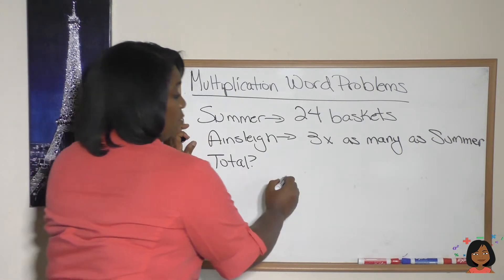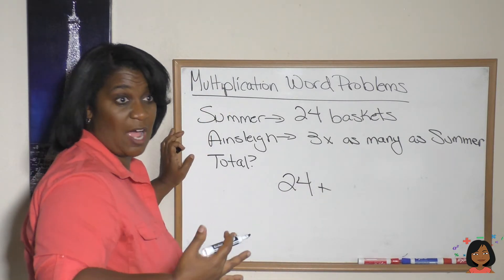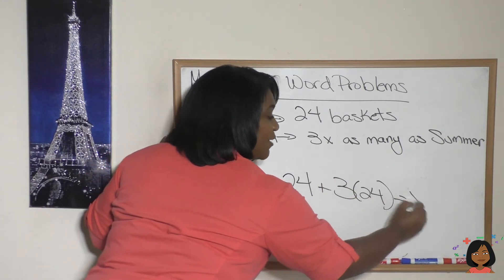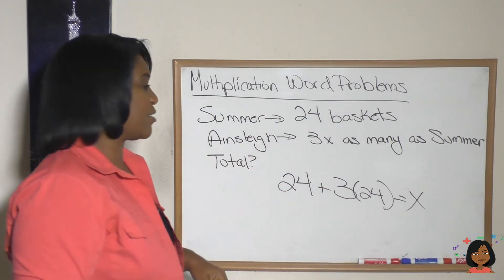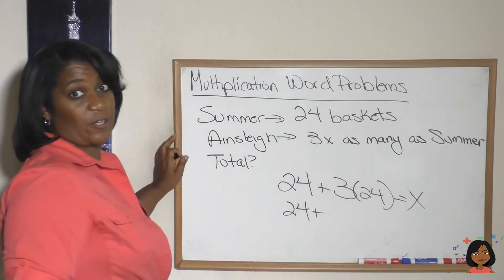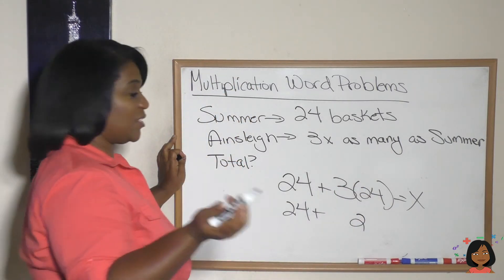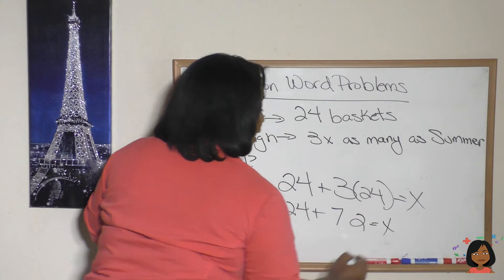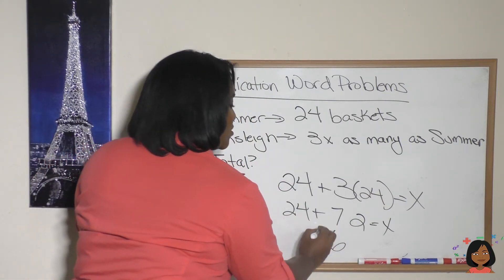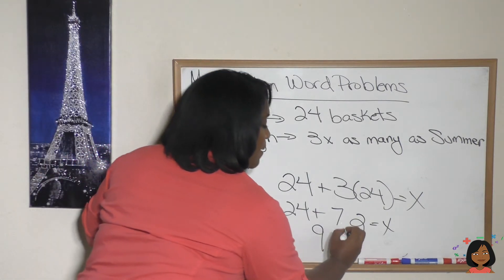Let's start with Summer — we know she made 24. Ainsley is three times what Summer did, so three times 24, and that'll give us our total, which we're going to use X for. So 24 plus 24 times three. Four times three is 12, three times two is six, and that gives us 72. Let's add them up: 24 plus 72 equals X. Four and two is six, seven and two is nine. So in total, they made 96 baskets.